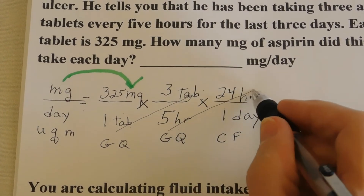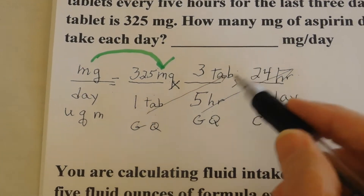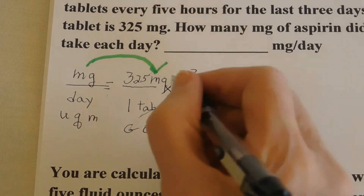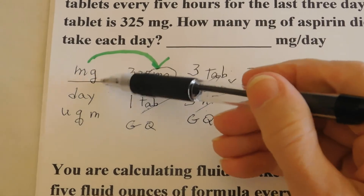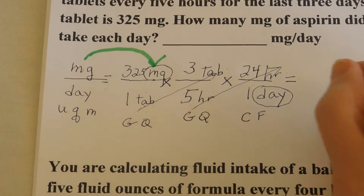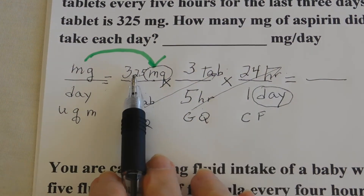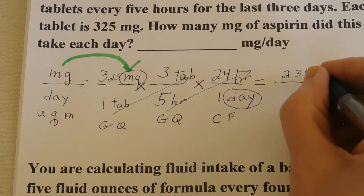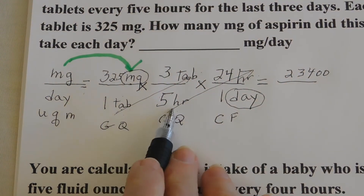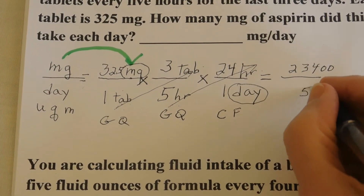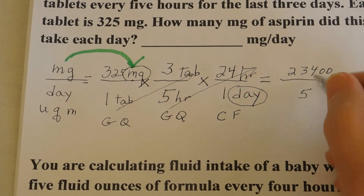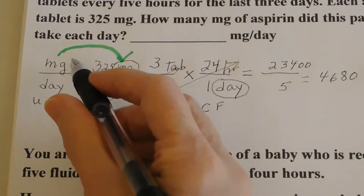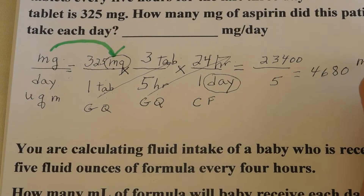We cross up here — tablets cancel, and hours cancel. What do we have left? We have day and we have milligrams, and that is our unit of measure. Now we know we are ready to calculate. We multiply across: 325 times 3 times 24, and that comes out to 23,400. That's our numerator. And we have 1 times 5 times 1, which is 5. We divide 23,400 by 5, and we end up with 4,680.